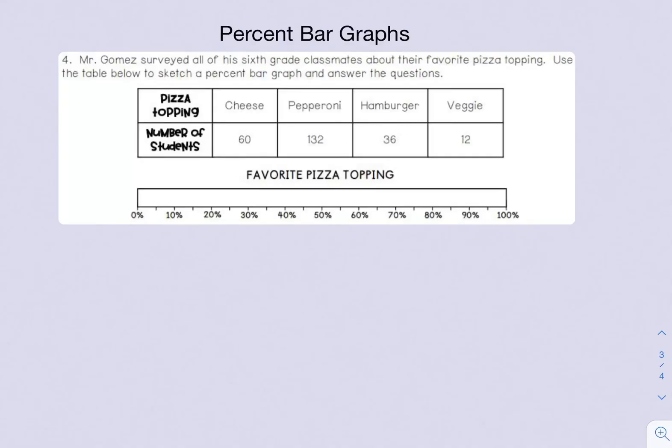A common mistake is that students will see 60 and go straight to 60 percent for the cheese pizza, and there will be an answer choice waiting for you that looks like that. But remember this says number of students, not percent. So it can't be 60 unless our total is 100, but our total is not 100 here.